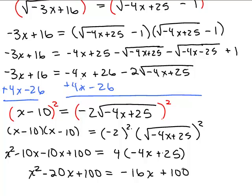So we've simplified both sides. We don't have any more square roots. And I see I have an X squared term. So that signifies I have a quadratic. When you have a quadratic, you set it equal to 0.